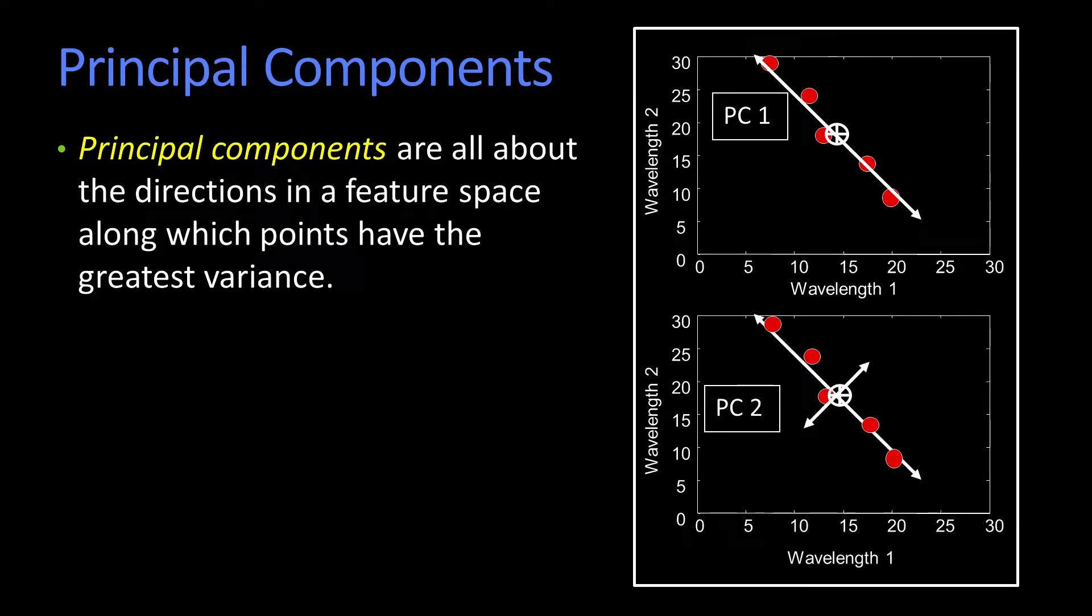Principal components are fundamentally about the directions. A component is really a direction in a feature space along which the points that you care about in that space have the greatest variation or variance. We'll make all of this more formal in a minute.